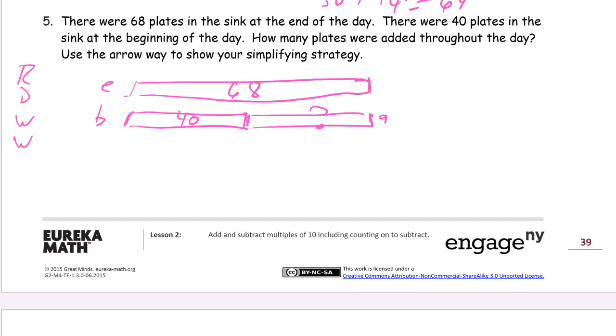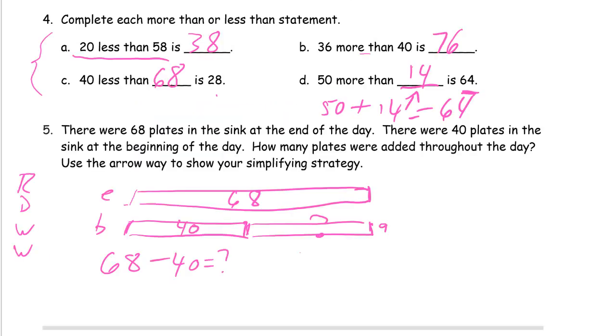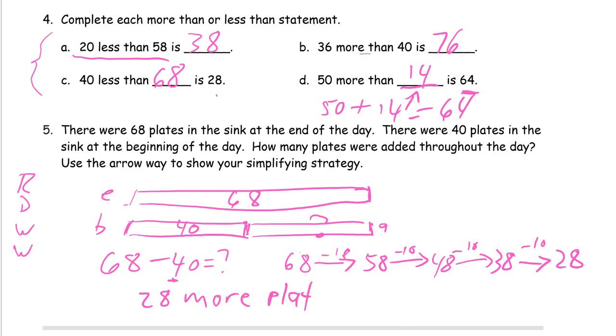So we're trying to find the difference between 68 and 40. So here's our arrow way simplifying strategy. We have to do 68 minus 40. There's our number sentence, and we're going to use the arrow way to just count it back. 68, 10 at a time, 58, minus another 10, 48, minus another 10, 38. Now that's one, two, three tens. We need to take away four tens, so it's one more 10. 28, 28 more plates were added.